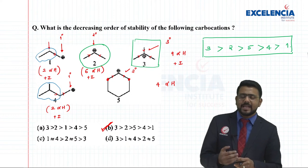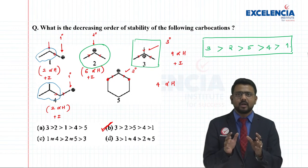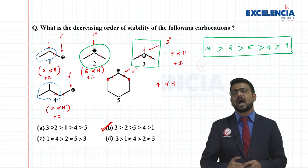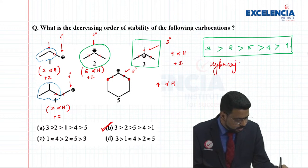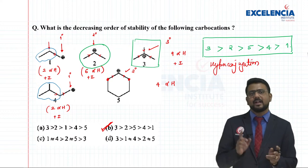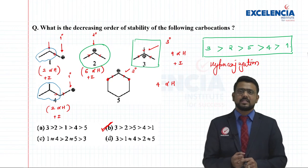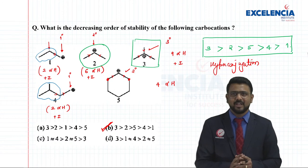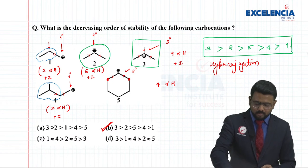Option B is the correct answer. In this case it was hyperconjugation which was predominant, and on that basis we determined the stability of these carbocations.